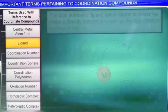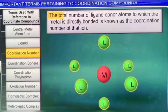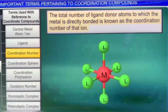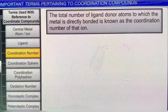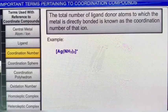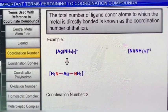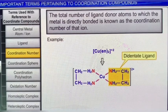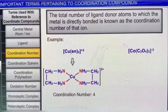Now, let's look at another important term: coordination number. The total number of ligand donor atoms to which the metal is directly bonded is known as the coordination number of that ion. For example, the coordination number of silver in the complex ion [Ag(NH₃)₂]⁺ is two, while that of nickel in the [Ni(NH₃)₄]²⁺ ion is four. Similarly, the coordination number of copper in [Cu(en)₂]²⁺, a complex with a didentate ligand, is four, while that of cobalt in [Co(C₂O₄)₃]³⁻, another complex with a didentate ligand, is six.